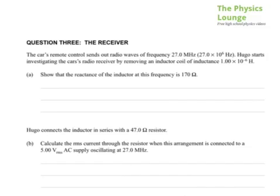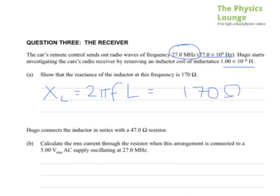Show that the reactance of the inductor at this frequency is 170 Hz. Well, this is a plug-and-chug one. You've got a formula. The reactance of the inductor equals 2 pi f L. You've just got to put the right numbers in. 2 pi f is omega, and you've got 2 times 3.141592, and times the frequency, 27 MHz, but you've got to remember it's times 10 to the 6, and then you times it by the inductance here. And that should give you a number of about 170 ohms. Remember, ohms is the unit for reactance.